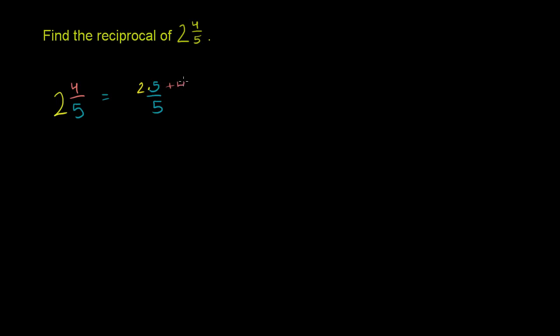2 times 5 is 10. 10 fifths is the same thing as 2, and then the 4 fifths is this 4 fifths right there. So this is going to be equal to 2 times 5 is 10, plus 4 is 14. 14 over 5.